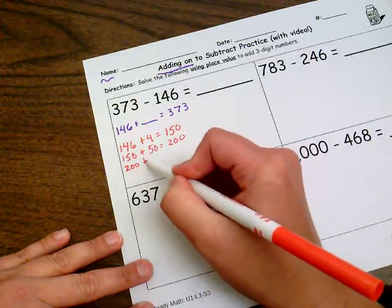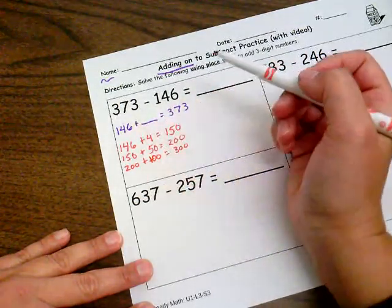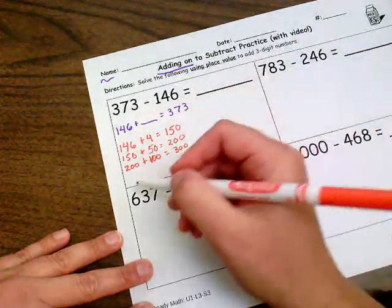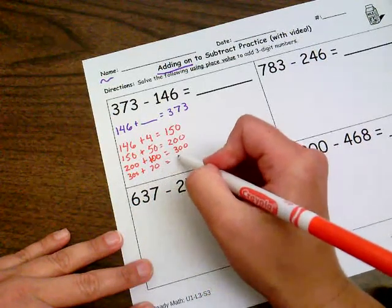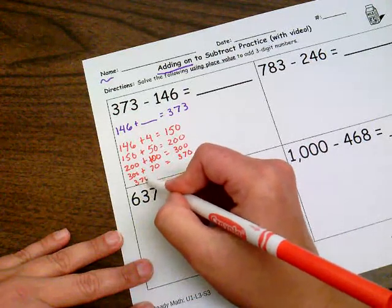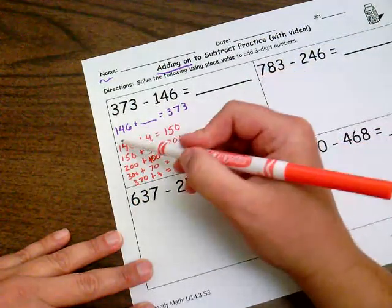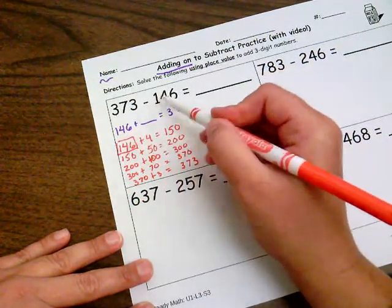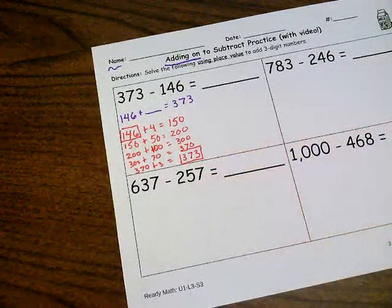Once I've added on ones, I'm going to add on some tens to get to my next hundred. So if I'm at 150, I can add 50 more to get me to 200. So ones, tens, I bet you can guess. We're going to do hundreds next. 200 plus 100 will get me to 300. I've got 73 more to go.